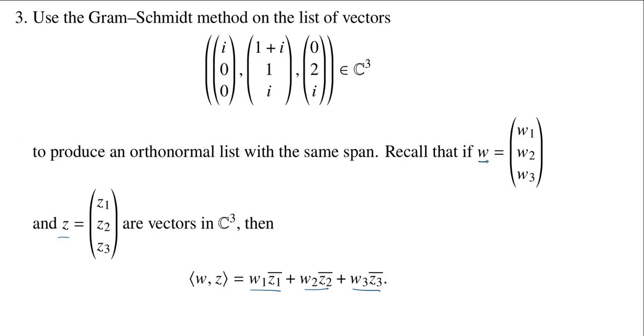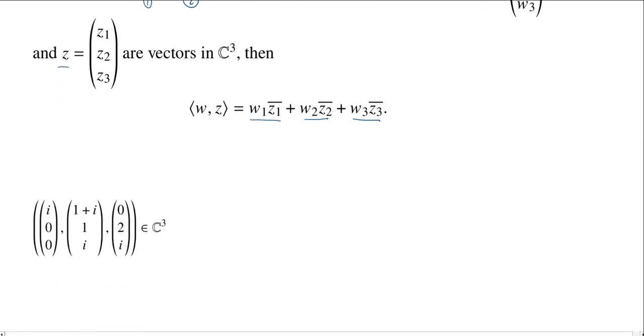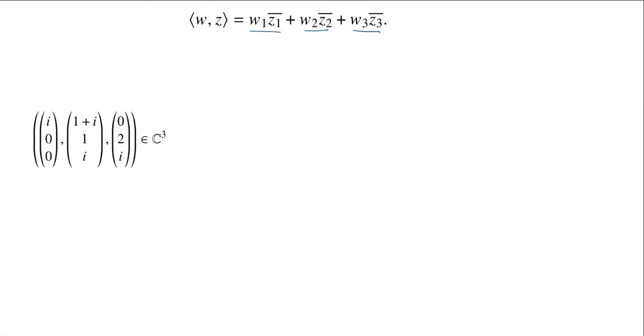With the modified Gram-Schmidt method, we do the ortho part first, and then we'll do the normalization at the end. So we won't have to do any normalizing as we go. We're going to want these vectors floating around, so I'll move them down here for us to see.